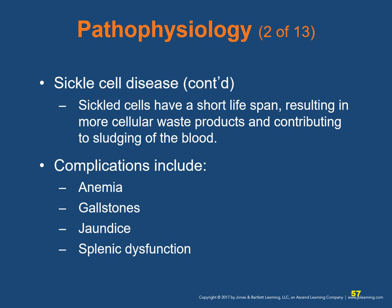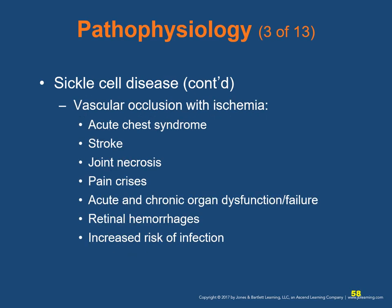Maintaining hydration is important as insufficient hydration leads to increased clumping. Complications of sickle cell disease include anemia, gallstones, jaundice, and splenic dysfunction. Other complications include vascular occlusion with ischemia, acute chest syndrome (hypoxia, dyspnea, chest discomfort, fever), stroke, joint necrosis (specifically the head of the femur and humerus), pain crises, acute and chronic organ dysfunction and failure, and retinal hemorrhage. There is also increased risk of infection.